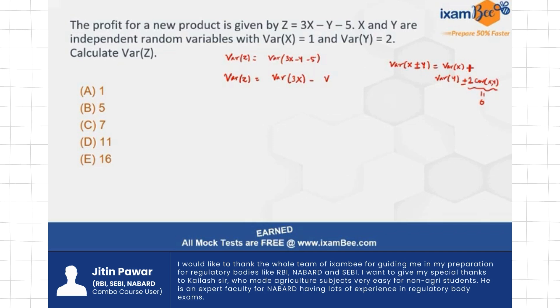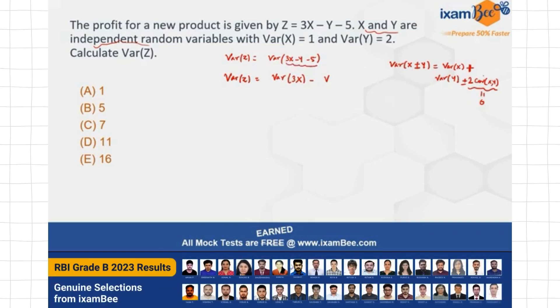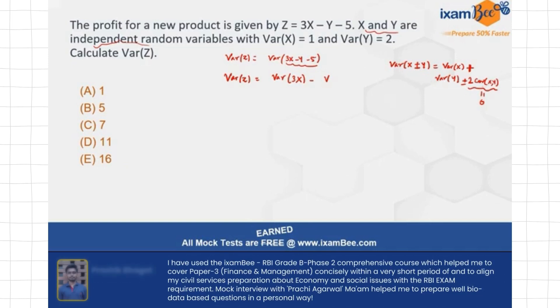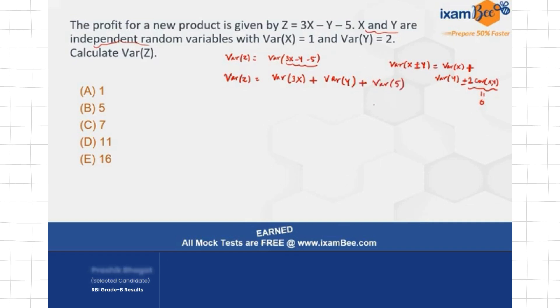So it's already mentioned that X and Y are independent random variables. So if you have to take out the variance of this whole term, there is not going to be a covariance term in the formula because it's already 0. So what do I have? I can break this down into variance of 3X plus the variance of Y, right? And plus the variance of the constant term minus 5.